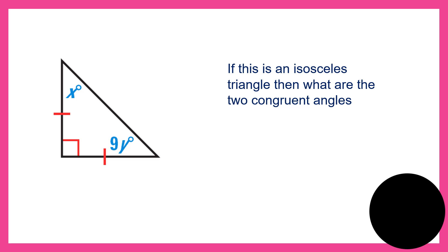If this is an isosceles triangle, what are the two congruent angles? X equals 45. Then 9y equals 45, divided by 9, therefore y equals 5, because 9 times 5 is 45.